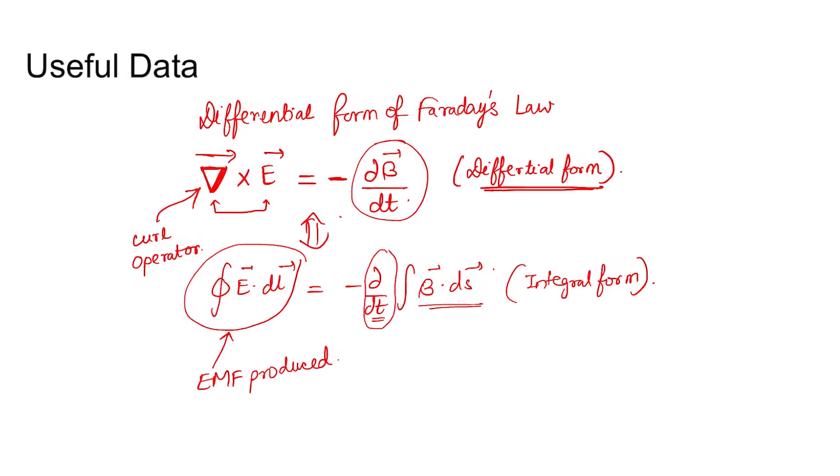Due to this, the curl of electric field will be non-zero only when there is a magnetic field changing with respect to time. For example, if you have a loop and you have some magnetic field changing with respect to time, then there exists some non-zero EMF if dB/dt is not equal to zero.